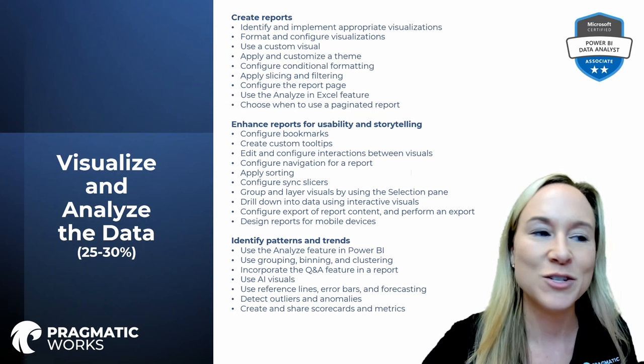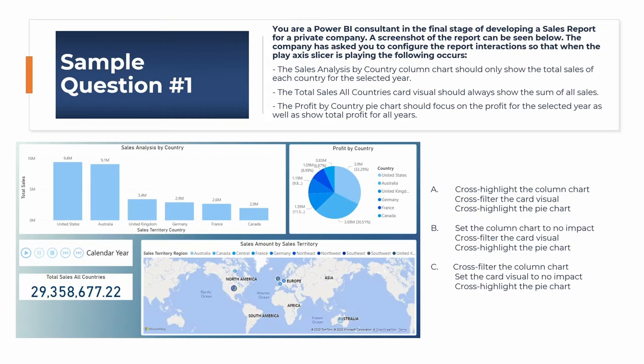Let's dive into our first question. You're a Power BI consultant in the final stage of developing a sales report for a private company. A screenshot of the report can be seen below. The company has asked you to configure the report interactions so that when the play axis slicer is playing: the Sales Analysis by Country column chart should only show total sales for the selected year; the Total Sales All Countries card visual should always show the sum of all sales; and the Profit by Country pie chart should focus on profit for the selected year as well as show total profit for all years. Let's dive into this report in Power BI Desktop and take a look.